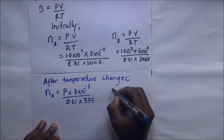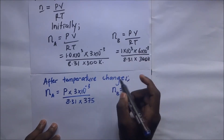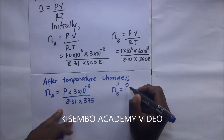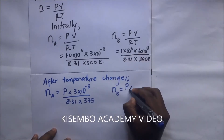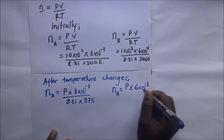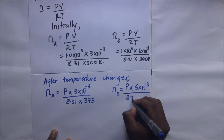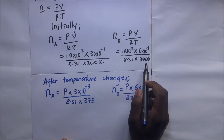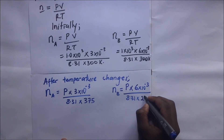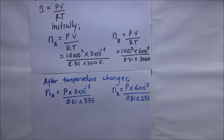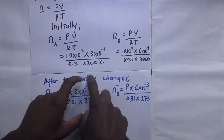For container B, the new number of moles is: n_B(new) = (P × 6×10⁻³) / (8.31 × 273), where P is the same unknown new pressure shared across both containers, the volume of B remains 6×10⁻³ cm³, and the new temperature of B is 273 kelvin.